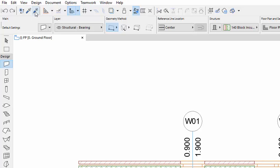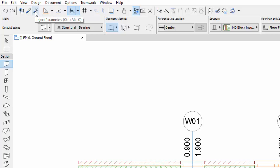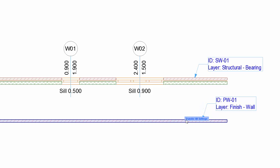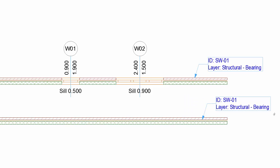Activate the Injection from the Toolbar or press Ctrl, or Command on Mac, plus Alt, and hover the cursor over the Partition Wall. A floating button appears with the Transfer All Settings label. Click on it to add the parameters to the wall. As you can see, all the parameters changed in accordance with the Structural Wall.